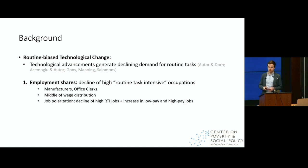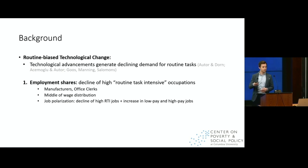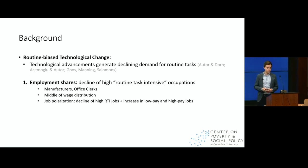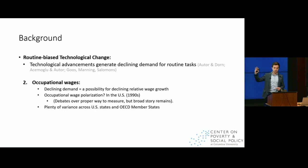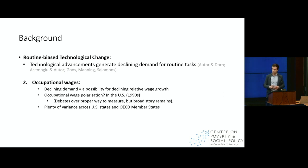We know these occupations tend to be in the middle of the wage and earnings distribution. So when their employment shares fall, if the employment shares of lower pay and higher pay jobs increase, we have what's called job polarization. We could also look at occupational wages or even annual earnings. We know that due to declining demand for routine tasks, workers in these occupations may experience declining relative wage growth over time.